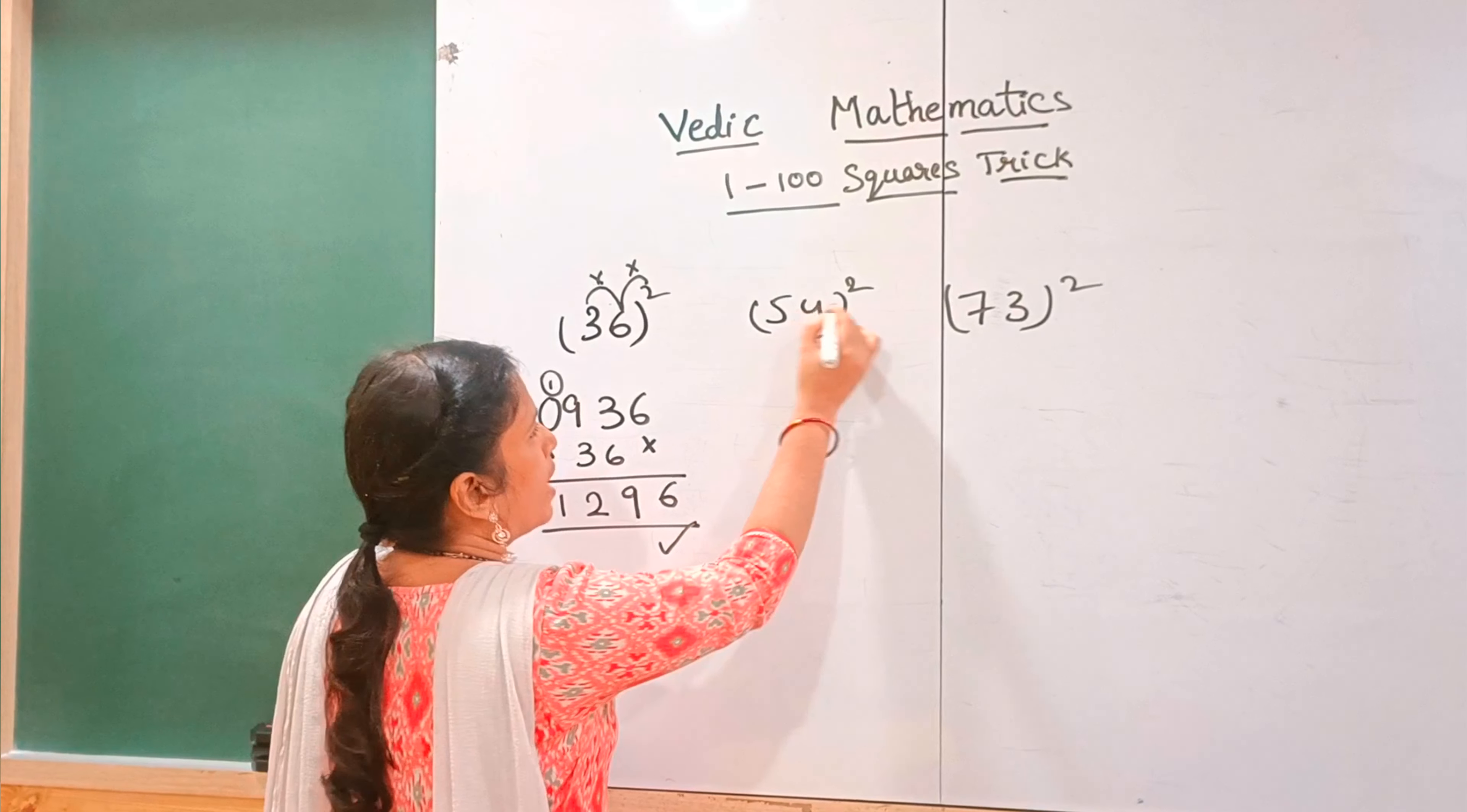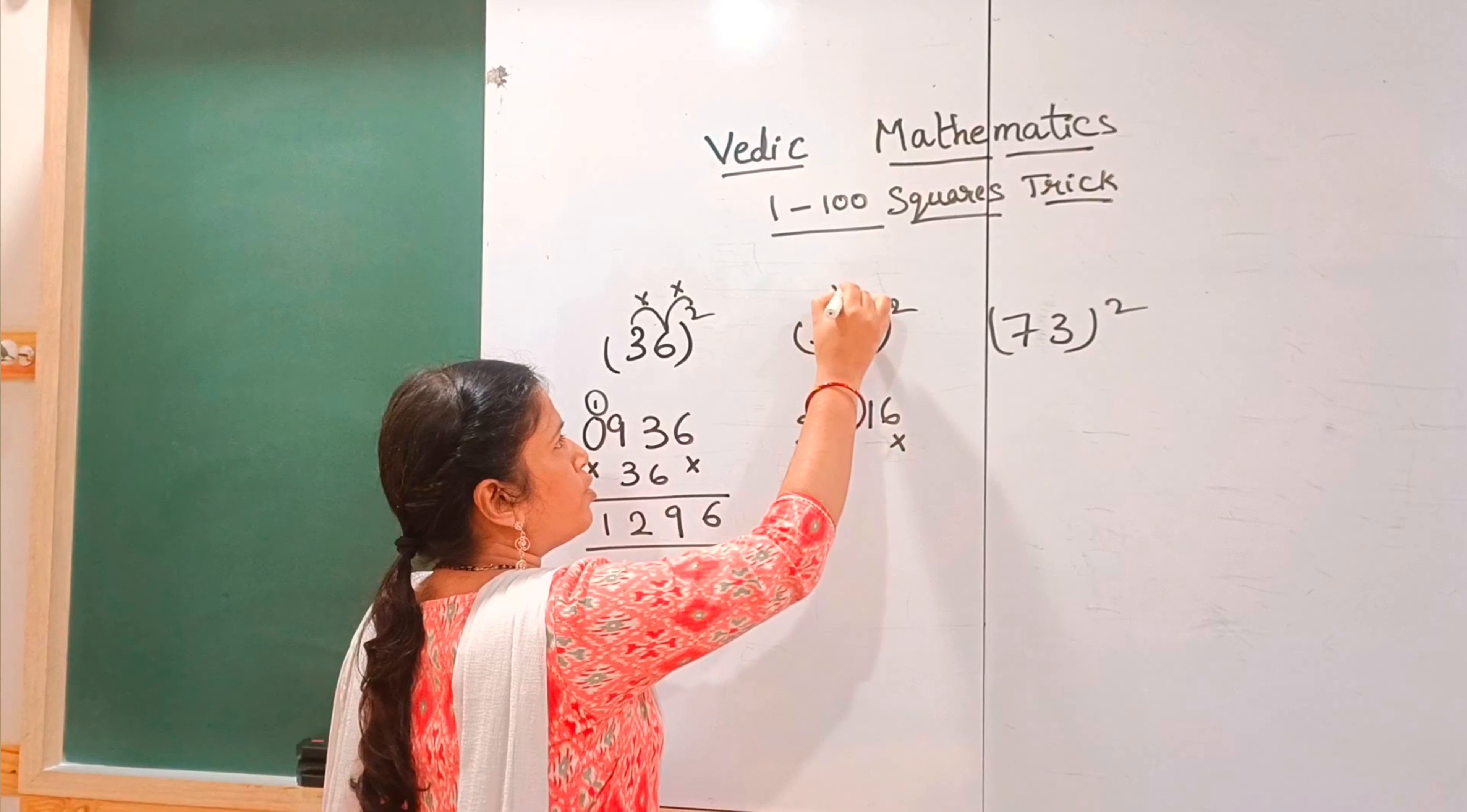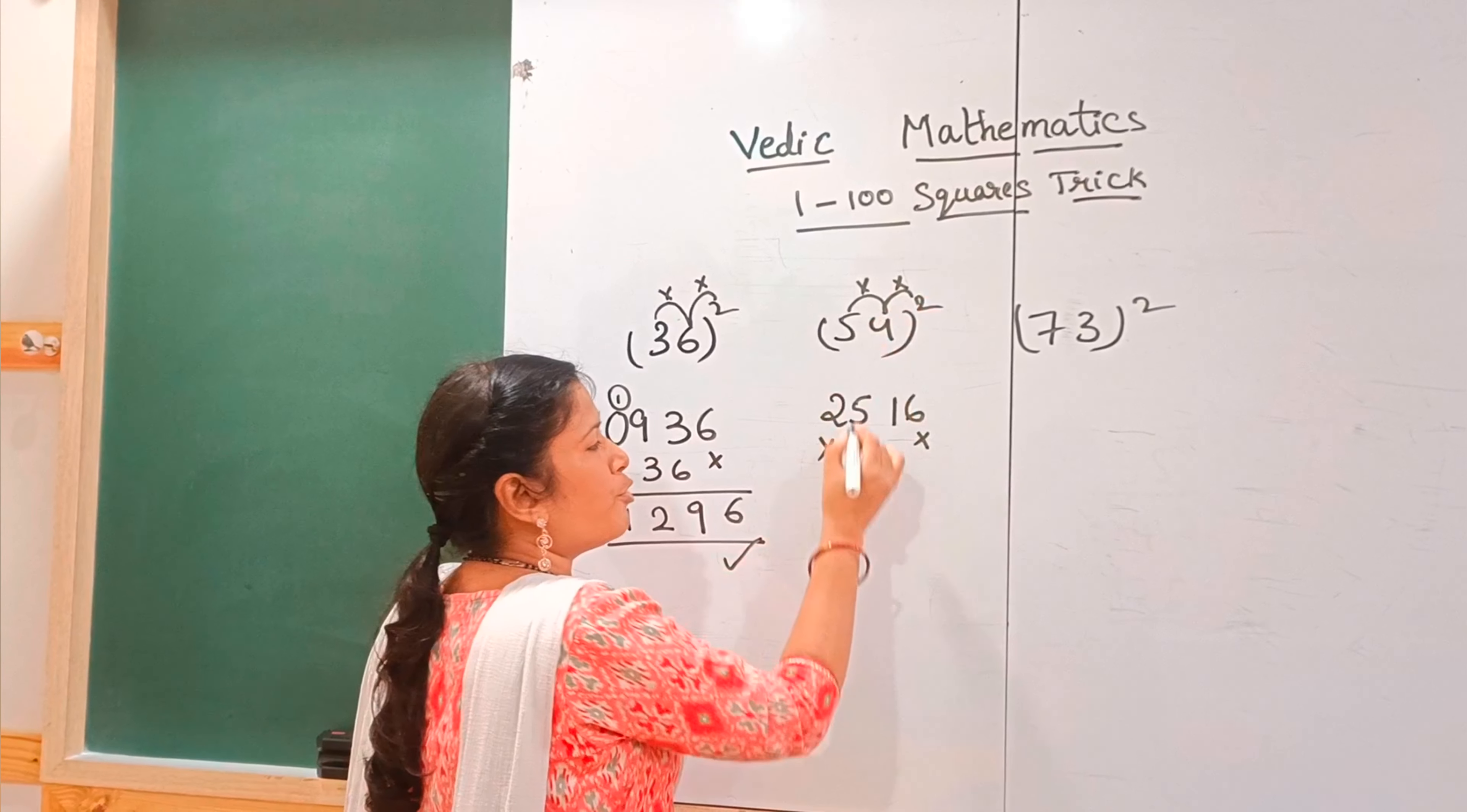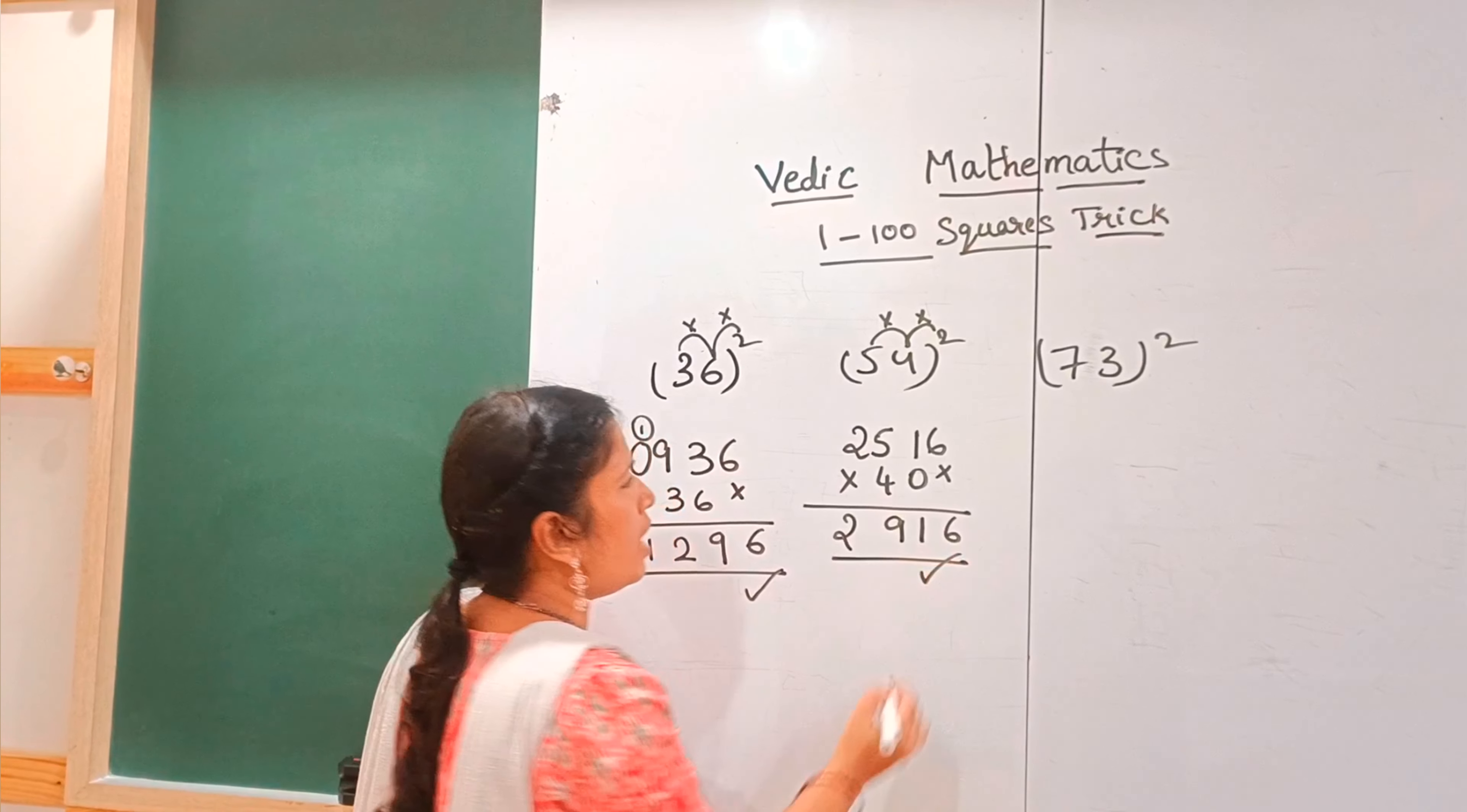So 5 square is 25 and 4 square is 16. So 5 into 4 into 2, 5 fours are 20, 2 fours are 8. So the answer is 1296.